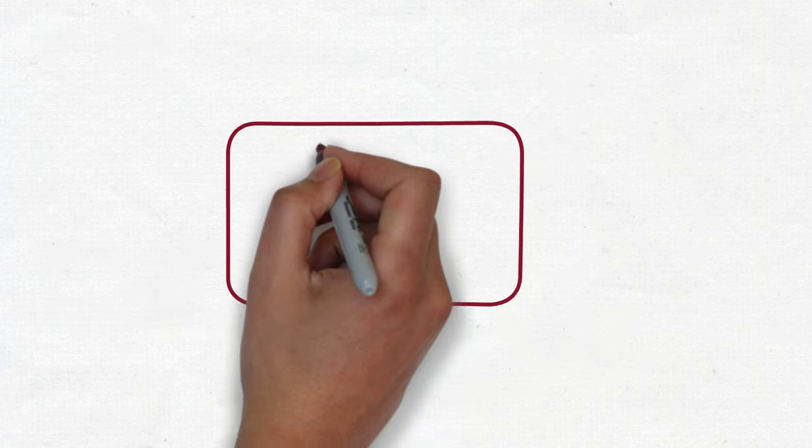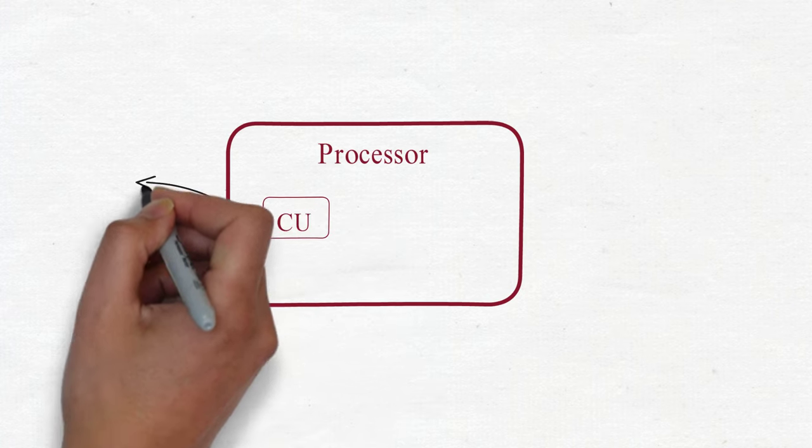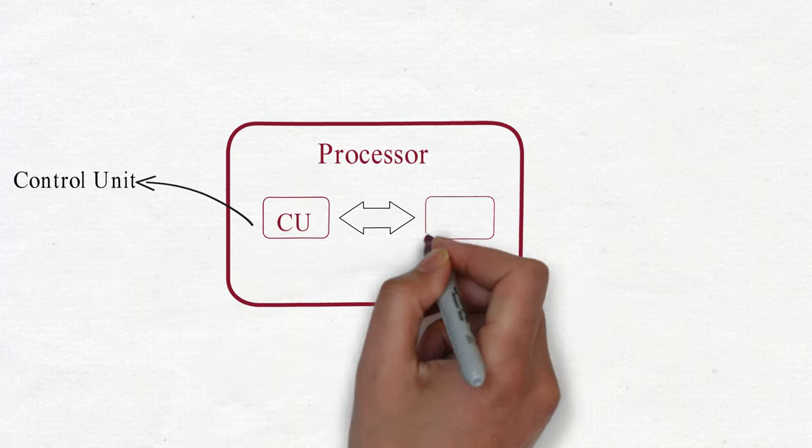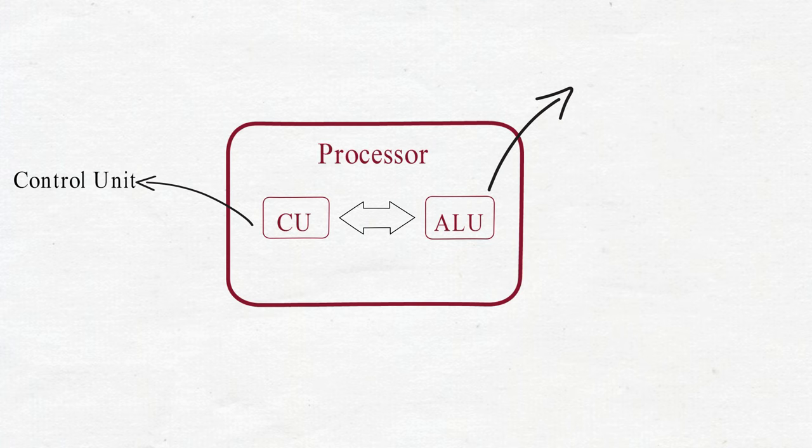Processor has two parts: first, CU or control unit, and second, ALU or arithmetic logic unit.